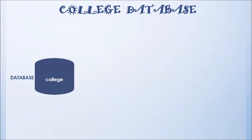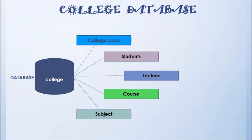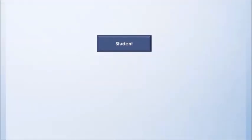Imagine we have to design database for college. What are the real world entities involved with college? They are College Code, Students, Lecturer, Course, Subject, etc. Once all the entities are listed, we find out the relationship between them and try to map all of them.